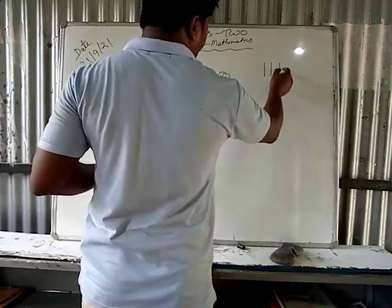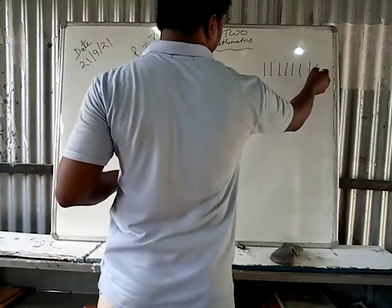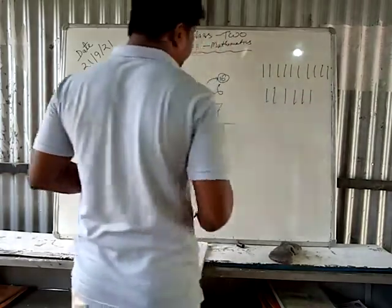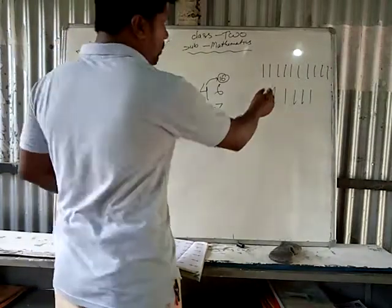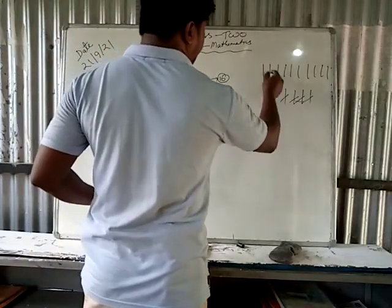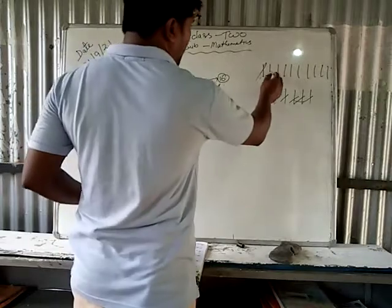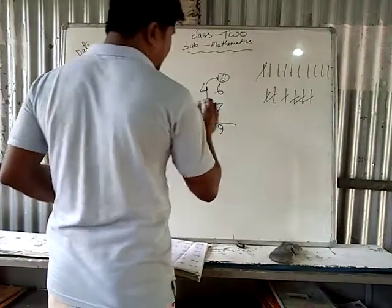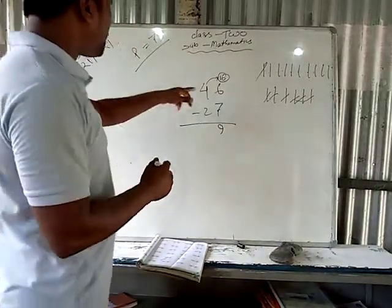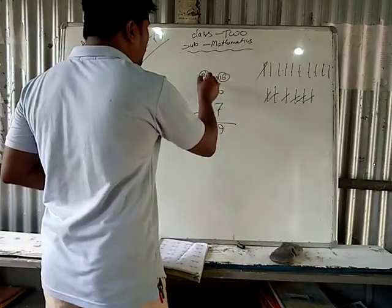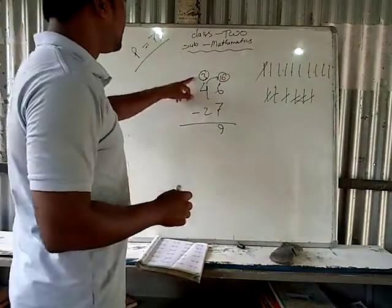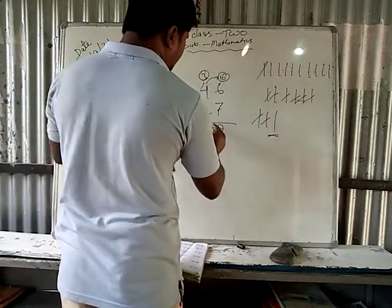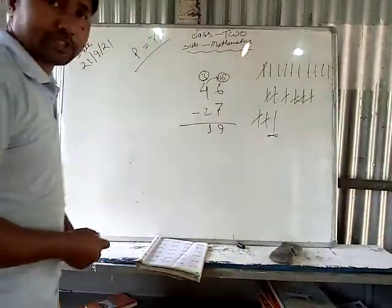From 16 subtract 7 — count up from 7 to 16, that gives 9. So 9 is the ones digit. Now here in the tens place, 3 is there because 1 you gave away. From 3 subtract 2 — that leaves 1. So 1 is here. The answer is 19. Understood?